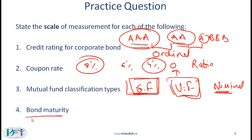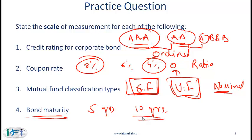Finally, bond maturity: you might have a bond that matures in 5 years and another that matures in 10 years. We can say the 10-year bond has a maturity that is two times that of the 5-year bond. You can also have a bond maturing very soon, so the maturity would be practically zero. Therefore bond maturity is also a ratio scale.